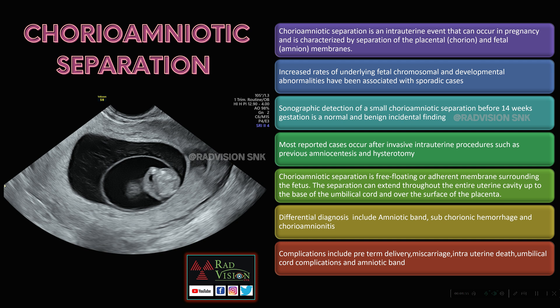Chorioamniotic separation occurs in pregnancy and is characterized by separation of the chorion from the fetal amniotic membrane. Normally you are not able to see the amnion separately from the chorion. Increased rates of underlying fetal chromosomal and developmental abnormalities can be seen. Most reported cases occur after invasive intrauterine procedures such as amniocentesis and gastrotomy. Chorioamniotic separation appears as a free-floating rudder membrane. The separation can extend throughout the entire uterine cavity up to the base of the umbilical cord or over the surface of the placenta. Differential diagnosis includes amniotic band, subchorionic hemorrhage, and chorioamnionitis.